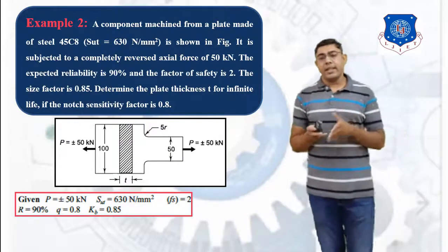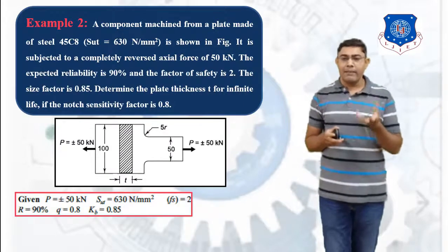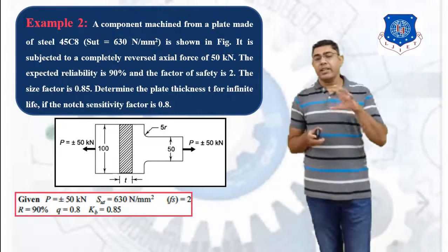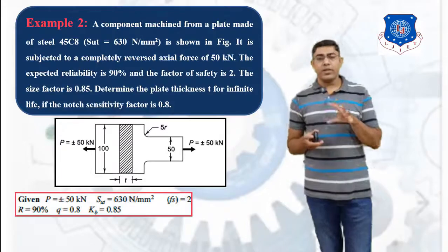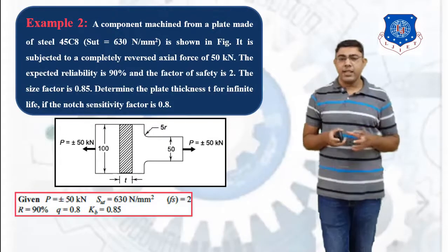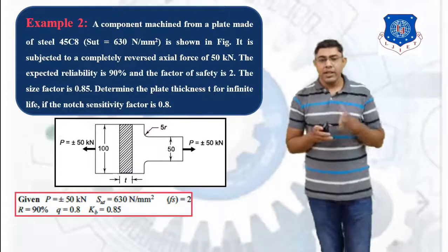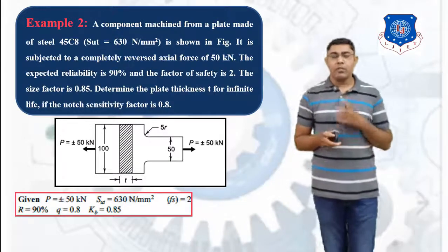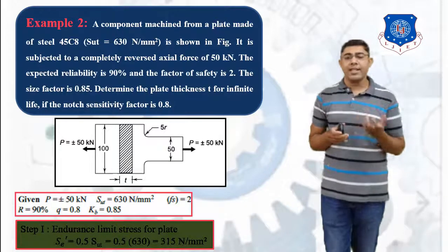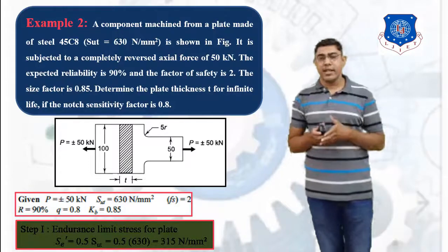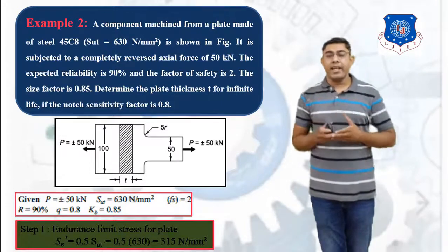To calculate the endurance limit, we first calculate Se' (the test specimen endurance limit). We use the approximate relationship between Se' and SUT. Since the material is steel, Se' = 0.5 × SUT. Substituting SUT = 630 N/mm², we get Se' = 315 N/mm².